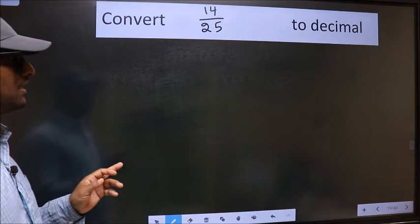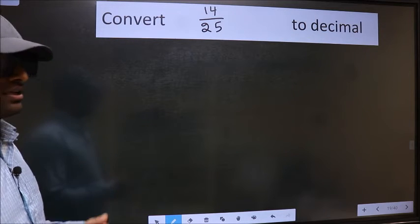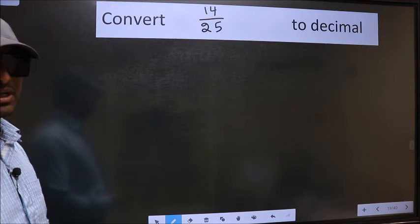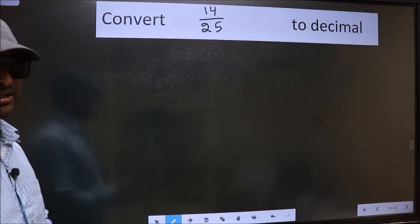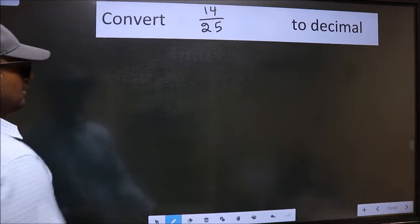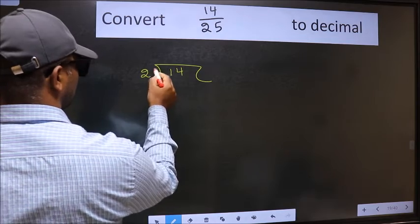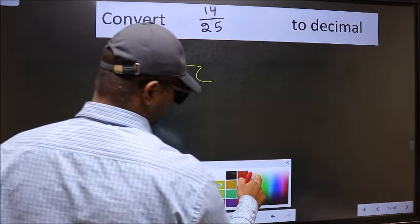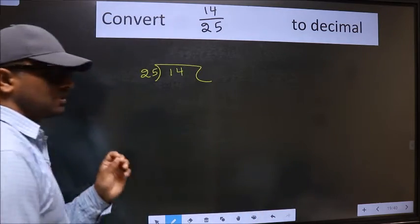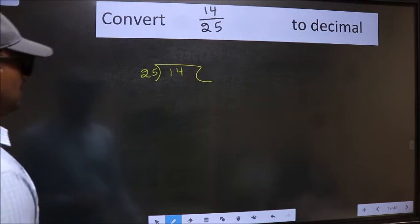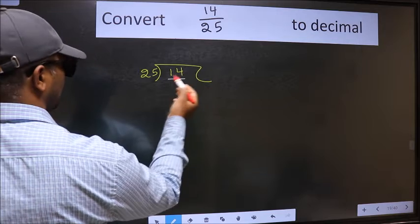Convert 14 by 25 to decimal. To convert to decimal, we should divide it. To divide, we should frame it in this way: 14 here and 25 here. This is your step 1.